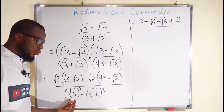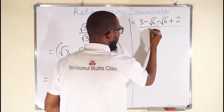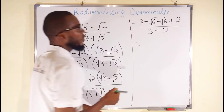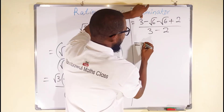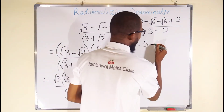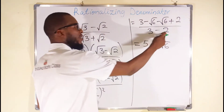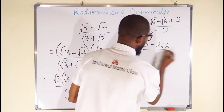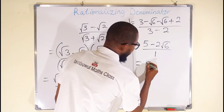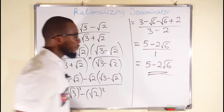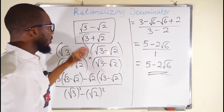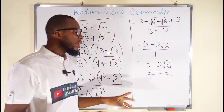On the denominator: root 3 squared — the square cancels the square root, leaving 3 — minus root 2 squared, leaving 2 as a rational number. Collecting like terms: 3 plus 2 is 5, and minus root 6 minus root 6 is minus 2 root 6. On the denominator, 3 minus 2 is 1 — and 1 is a rational number. Dividing any number by 1 does not change the value, so this finally equals 5 minus 2 root 6. This expression is exactly equal to the original — you can use your calculator to verify the values are the same.